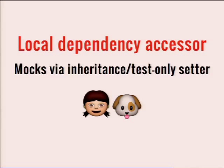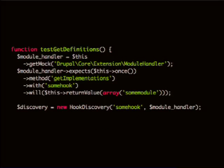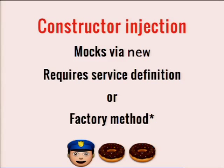The last example is just straight dependency injection. This subject normally just had the hook, so we add module_handler to the constructor, and then you just call straight out to module_handler because it had it when it was constructed. The test for this is pretty simple — you lose the call for the setter. That passes. So that is very testable. It mocks via new — just making a new class — but it requires a service definition or a factory method, meaning the service definition is what specifies which dependencies get injected.